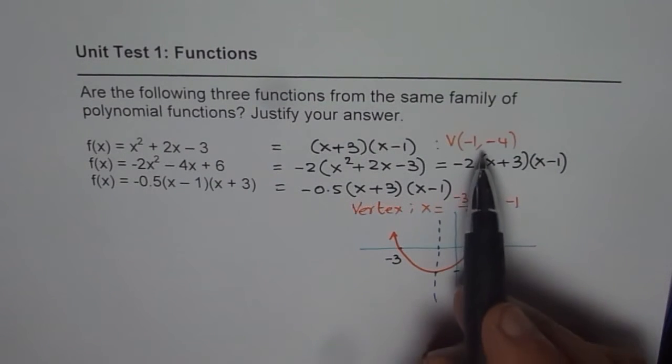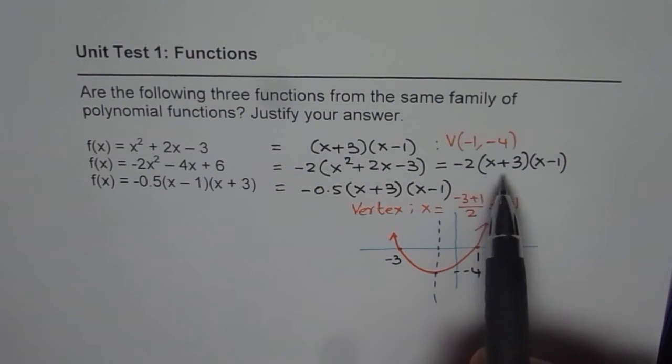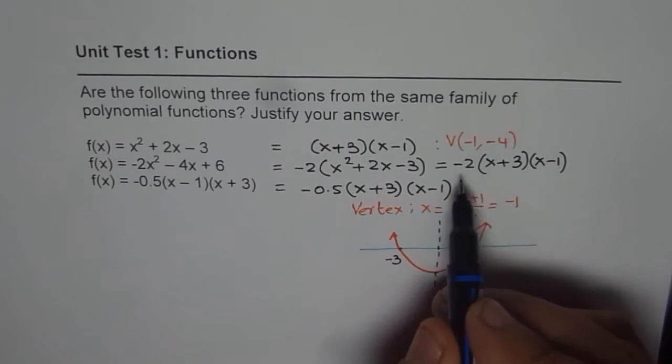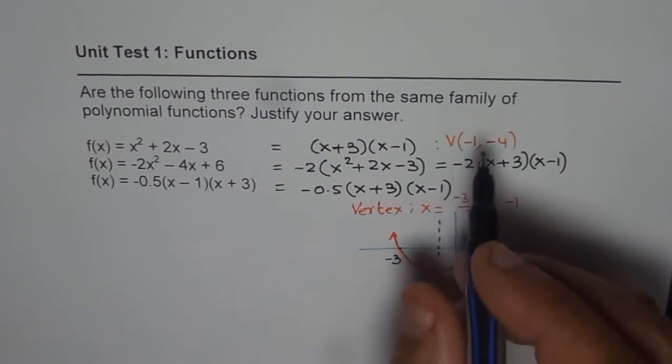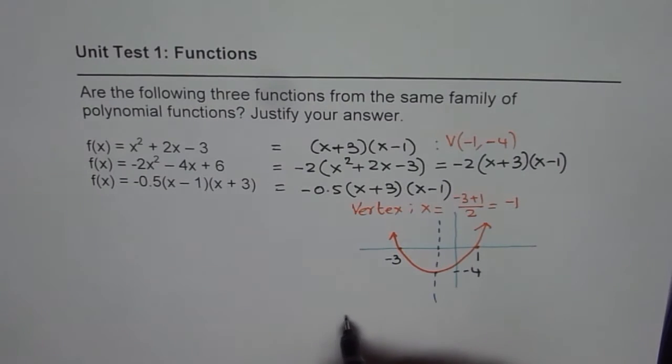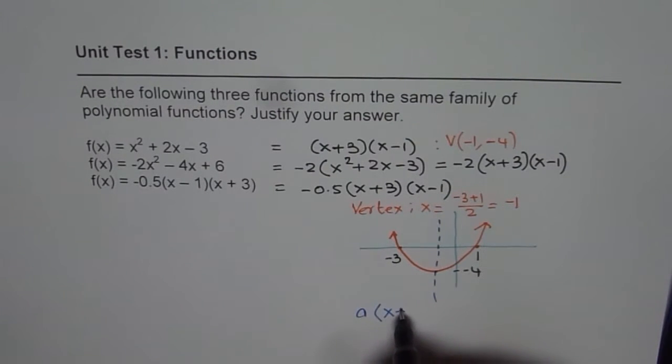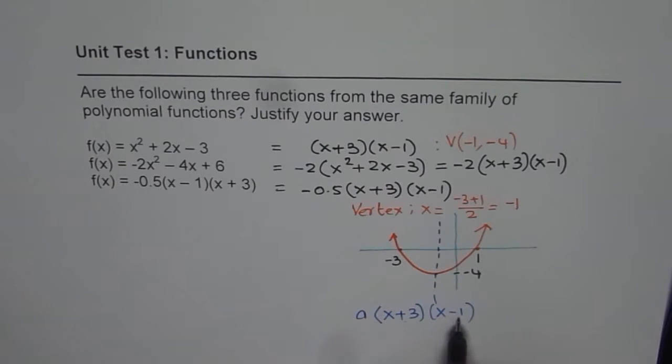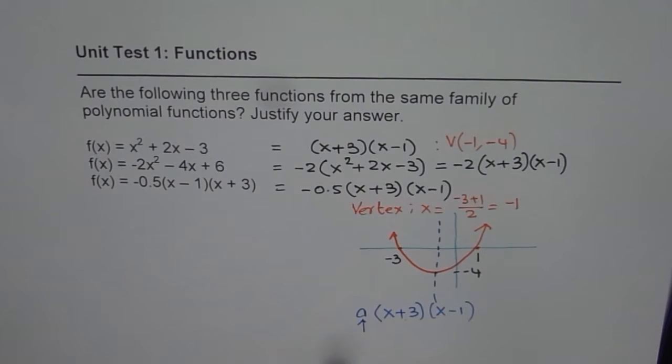That is what we get for the very first function. For the next one, we have the same x-intercepts. But in this case, a value is minus 2. So, basically, the relation is, if you can see, the relation is a times x plus 3 times x minus 1. So, they belong to the same family with exactly same x-intercepts. But leading coefficient is different. And that is why we say these polynomial functions belong to the same family.